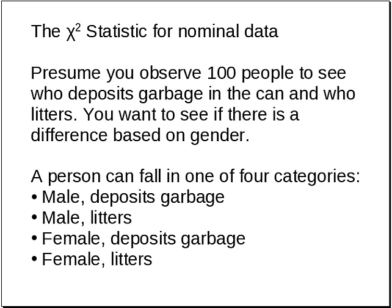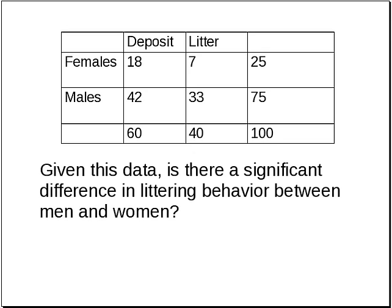Presume that you observe a hundred people to see who deposits garbage in the can and who litters, and you want to see if there's a difference based on gender. The four categories are: a male who deposits the garbage, a male who litters, a female who deposits the garbage, and a female who litters. After you do your observation, you find the following data. Given this data, is there a significant difference in littering behavior between men and women?